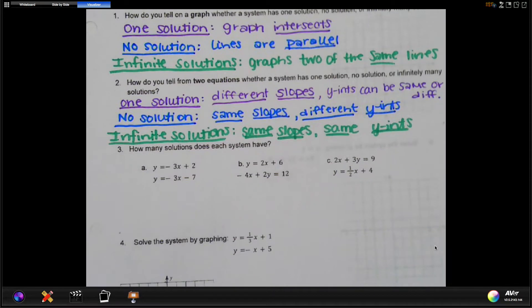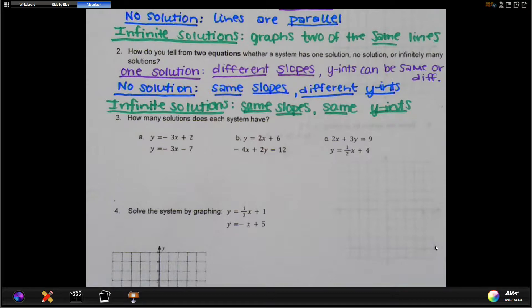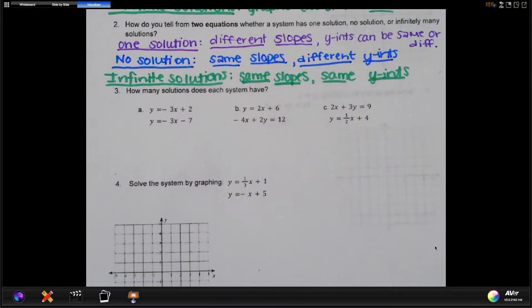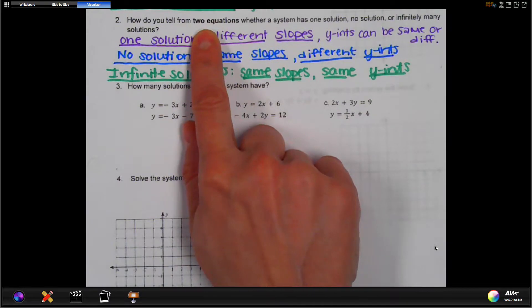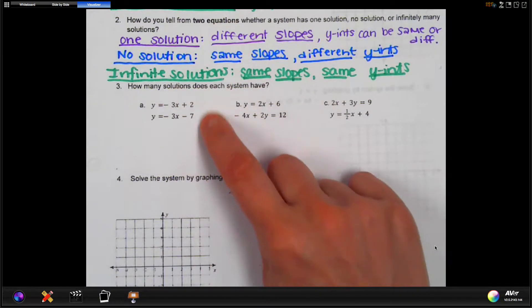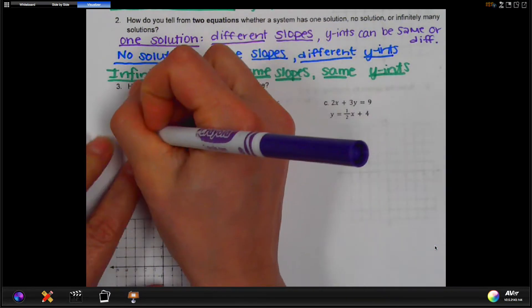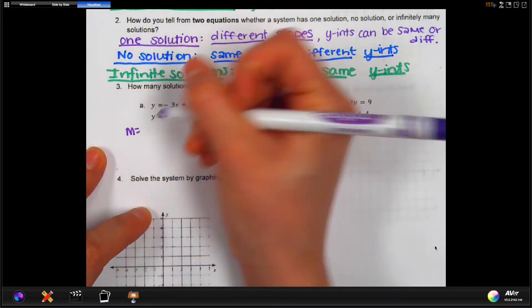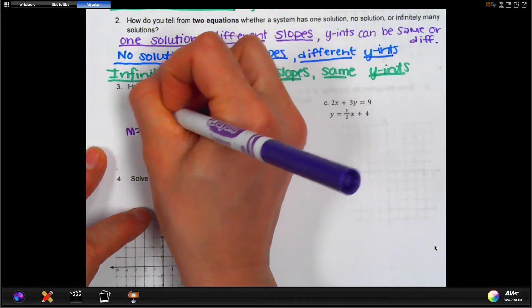These are just some examples of actually doing these out. So how many solutions does each system have? Okay, let's start with part A. So in order to figure this out, we really are going to use the notes from above because this is asking you about equations and here are the two equations. So what we want to do is we want to start by identifying M and B. M being our slope and B being our y-intercept for our first graph.